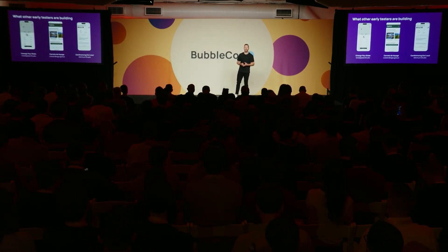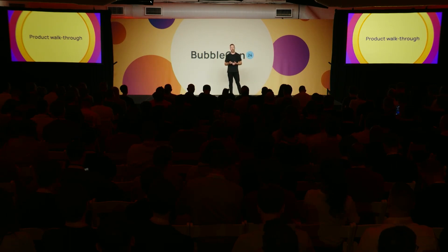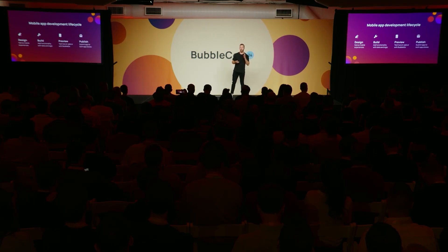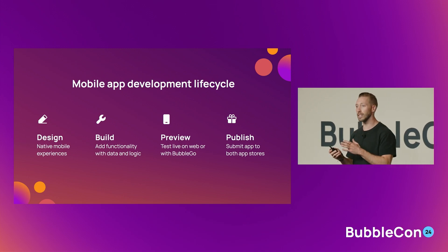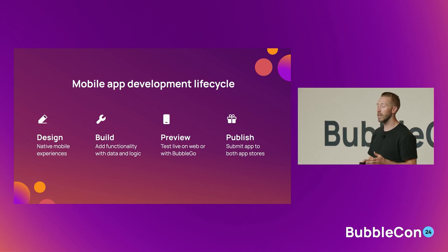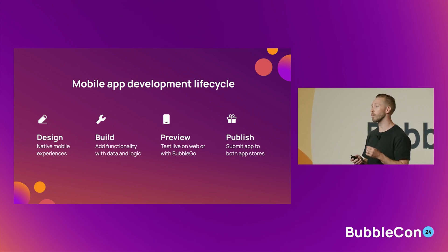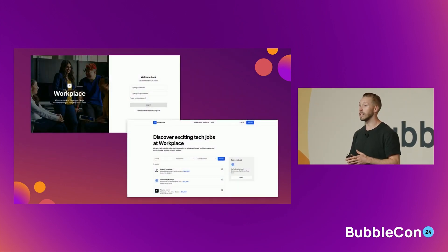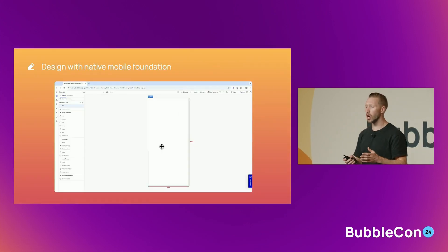It was really special to work with these teams over the past few months and see their vision come true. I want to highlight the full life cycle of mobile app development that the editor now offers: a suite of native mobile components to design apps that look and feel native, powerful functionality with existing logic and data capabilities including new mobile-specific workflows, a new web preview experience, Bubble Go — an app that lets you test right on your device — and the ability to submit your build to the Google and Apple App Stores right from the Bubble editor.